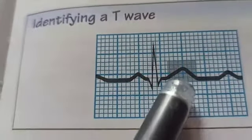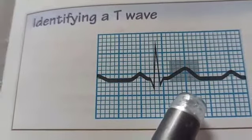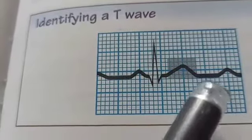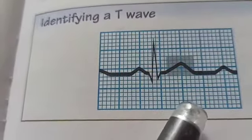The T wave represents the refractory period of repolarization or ventricular recovery. It typically appears rounded and smooth, follows the ST segment, and has an amplitude of 0.5 millimeters.